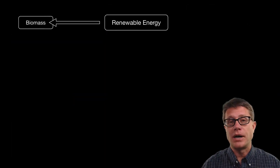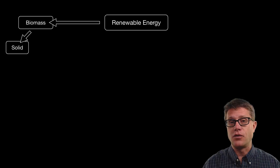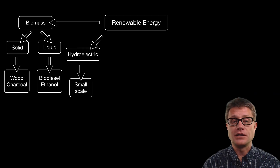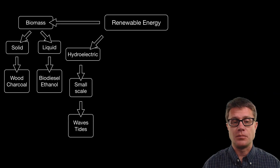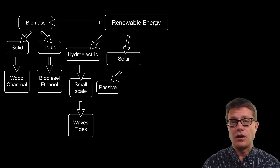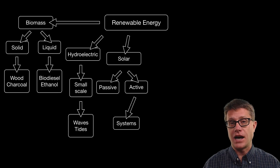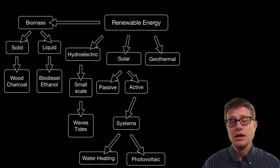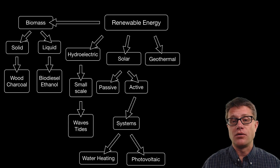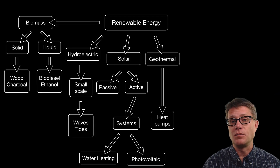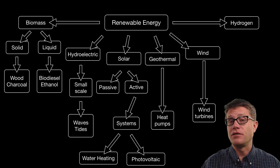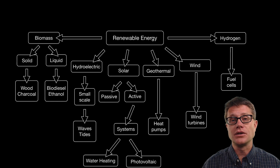We will start by talking about biomass — one of the most ancient forms — including solid forms like wood and charcoal, and more recent forms like biodiesel and ethanol. We will then talk about small-scale hydroelectric power in the form of waves and tides, followed by all the different types of solar systems, both passive and active, including thermal heating systems and photovoltaics. Then geothermal electricity generation and heat pumps, wind power and wind turbines, and finally hydrogen as a future energy source harnessed in fuel cells.